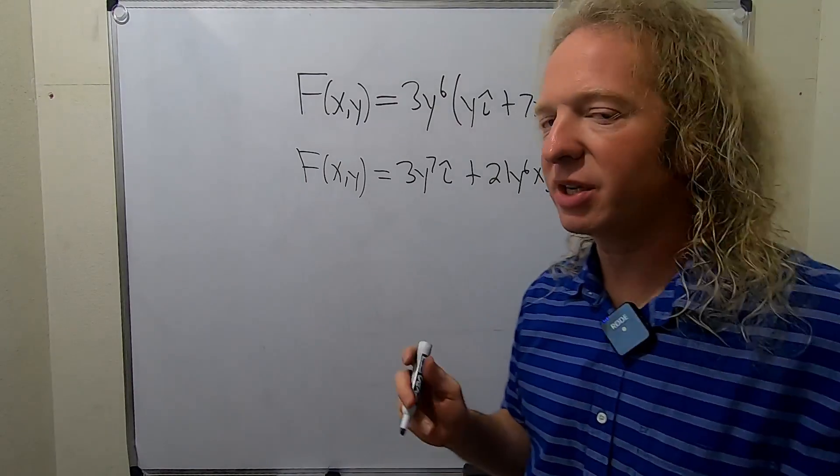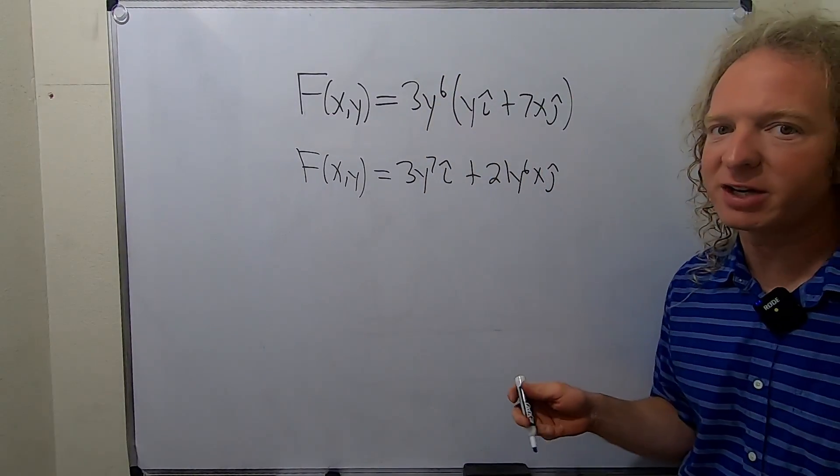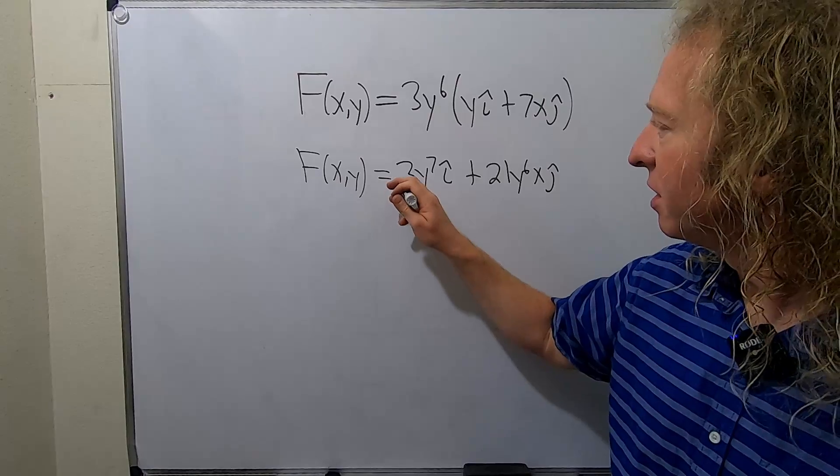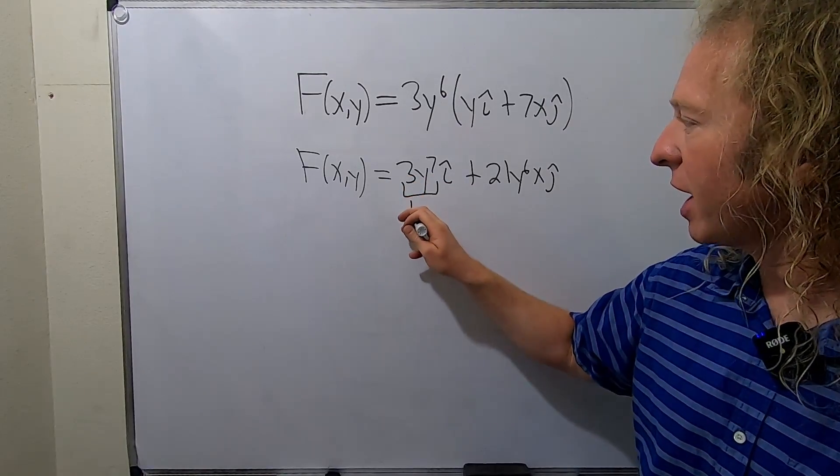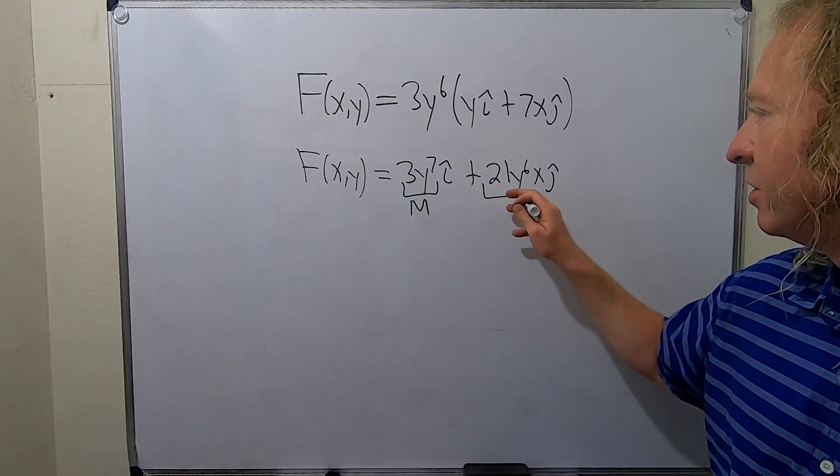Okay, so the question is: is the vector field conservative? And if it is, we'll actually go through and find a potential function, just for fun. So this is your M, always, and this is your N.